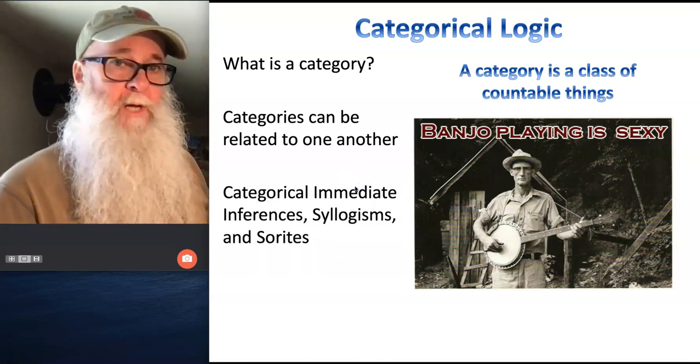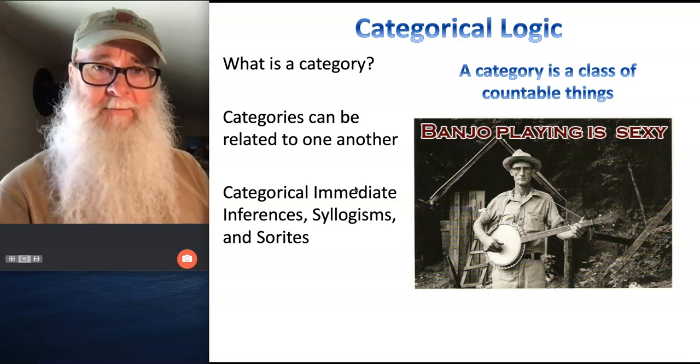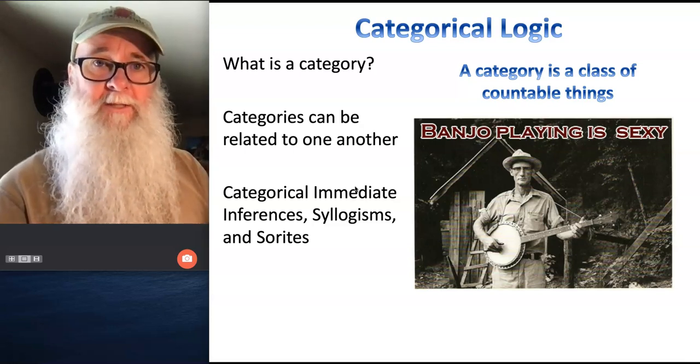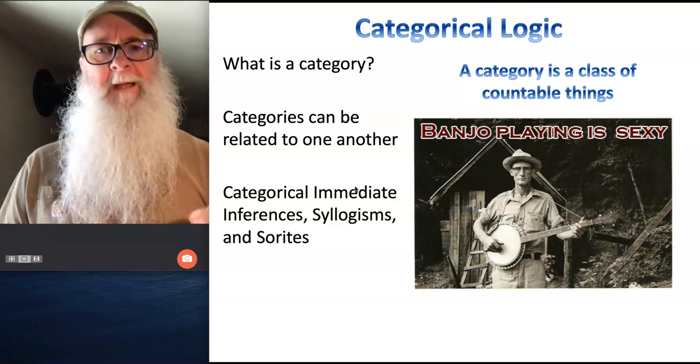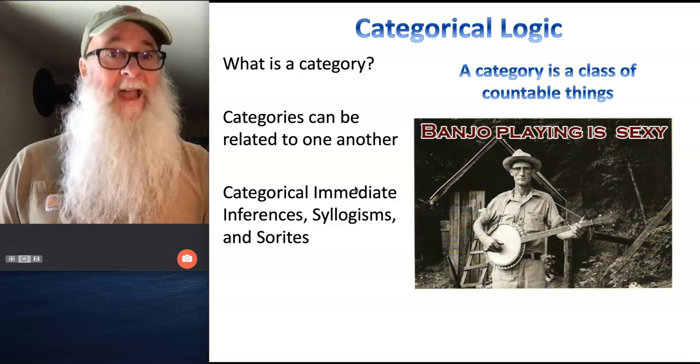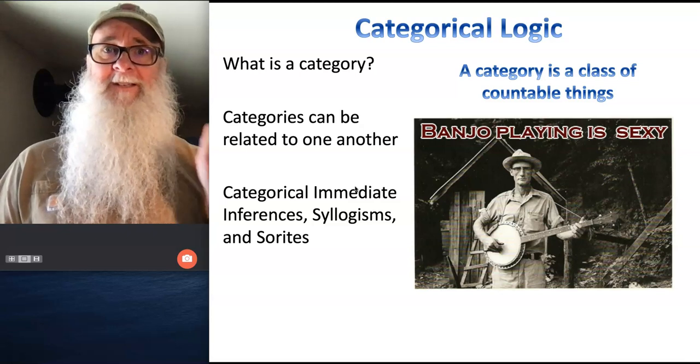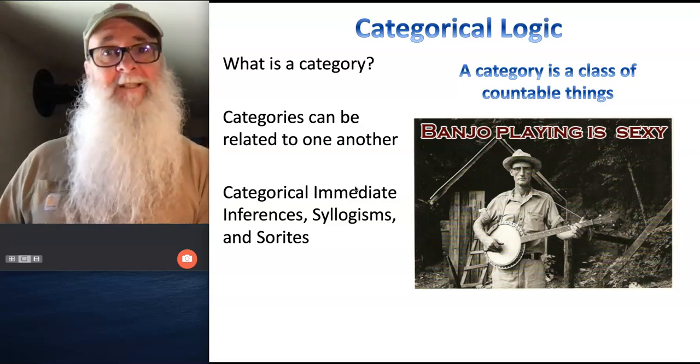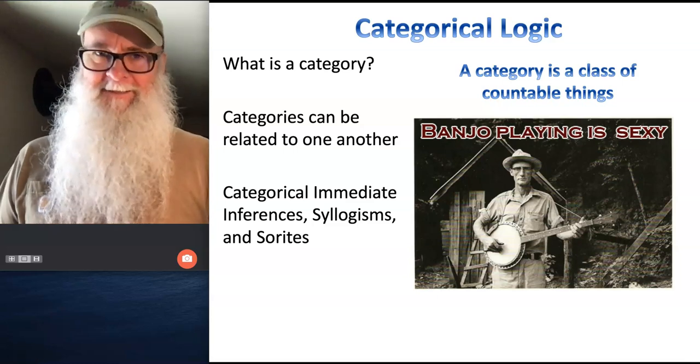For our purposes in categorical logic, we're going to look at making three different kinds of arguments: categorical immediate inferences, categorical syllogisms, and categorical sorites, and we're going to spend the next couple of weeks learning about categorical immediate inferences, and you're going to learn how to make valid categorical inferences, which are arguments that have exactly one premise that leads immediately to a conclusion. All right, so get ready. This is going to be fun.